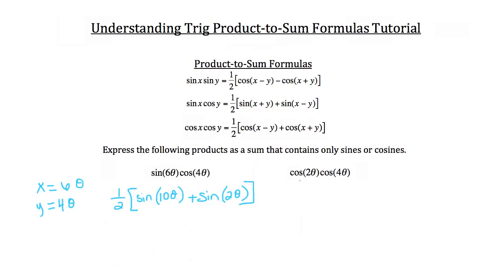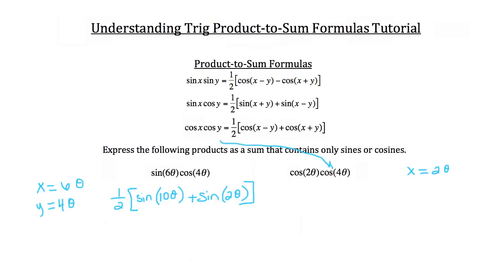Now let's take a look at the next problem. In this problem, we've got a cosine times a cosine, so we can use this product to sum formula right here. You'll notice that two theta is going to be our x for this problem, and four theta is going to be our y.